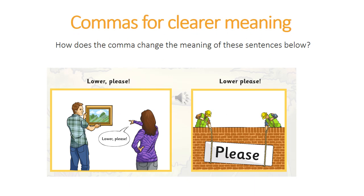Another way of showing how important commas are to make meaning clear is shown in the pictures on your screen. Could you take a minute to look at the pictures and explain how the comma changes the meaning? In the first picture, the comma helps to explain that the lady is asking the man to lower the picture on the wall. Whereas if you take the comma out, it sounds as though the word 'please' needs lowering. Can you see how just one small comma makes such a difference to meaning?